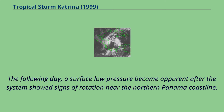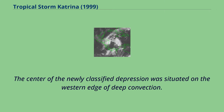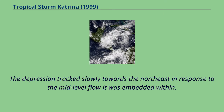The following day, a surface low pressure became apparent after the system showed signs of rotation near the northern Panama coastline. On October 28, a Hurricane Hunter flight into the circulation revealed a well-defined low-pressure system, resulting in the system being declared Tropical Depression 15 while situated roughly 175 miles east of Bluefields, Nicaragua. The center of the newly classified depression was situated on the western edge of deep convection, and the depression tracked slowly towards the northeast in response to the mid-level flow it was embedded within.